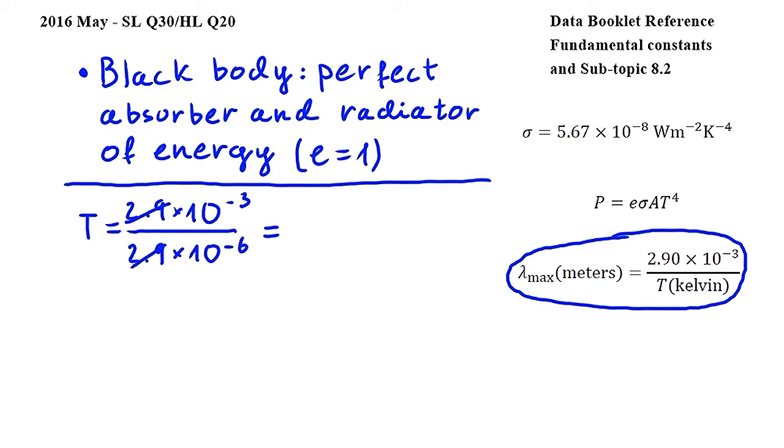I can simplify by 2.9, and when I divide 10 to the power of negative 3 by 10 to the power of negative 6, I have to subtract the powers, so I get negative 3 minus negative 6. In other words, negative 3 plus 6, which gives me 10 to the power of 3 Kelvins, or 1000 Kelvins.